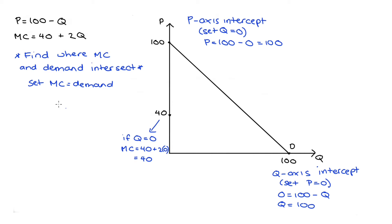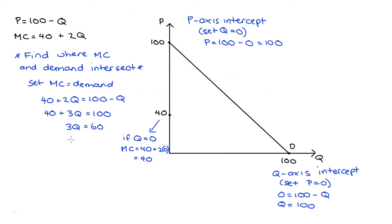To find the intersection point I set marginal cost equal to demand: 40 plus 2Q equals 100 minus Q. Adding Q to both sides gives 40 plus 3Q equals 100. Taking away 40 gives 3Q equals 60, and dividing by 3 gives Q equals 20. So the marginal cost curve intersects the demand curve when quantity equals 20.